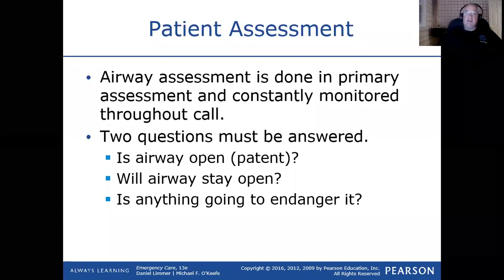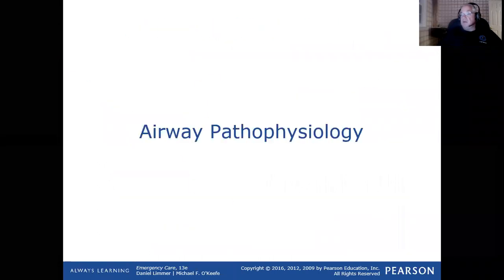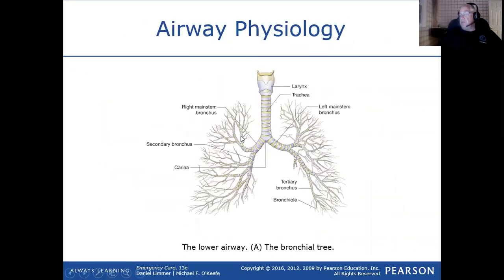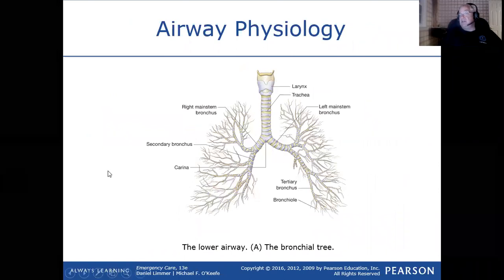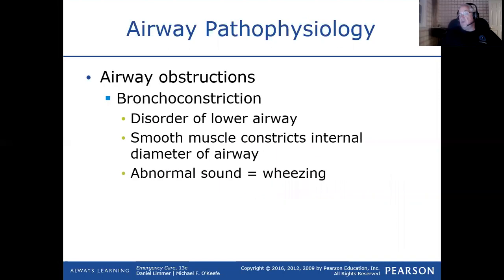Bronchitis involves the bigger tubes, while bronchiolitis involves the smaller tubes. They're similar but not exactly the same. Kids tend to get more bronchiolitis than adults do.